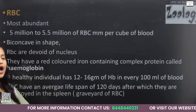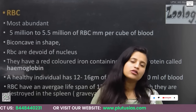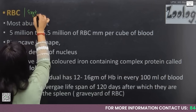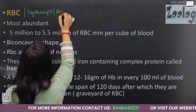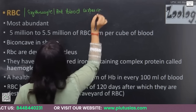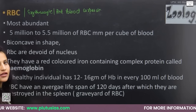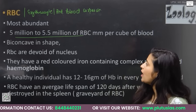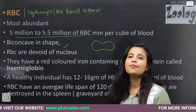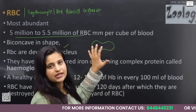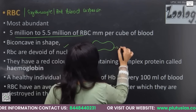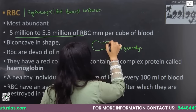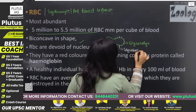RBCs are also known as erythrocytes or red blood corpuscles. RBCs are present in maximum number — 5 to 5.5 million per mm³ of blood. RBCs are biconcave in shape. On the surface of the RBC membrane — called the glycocalyx — some glycoproteins are present. Glycoprotein means the protein is conjugated with a carbohydrate. These glycoproteins are antigens.